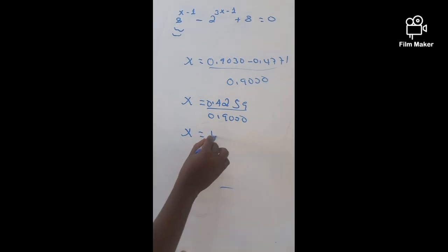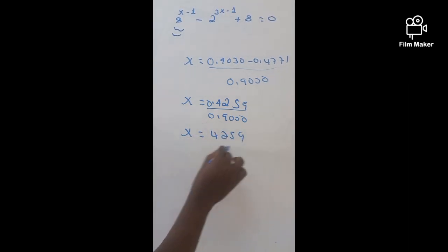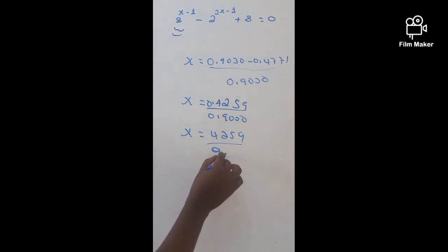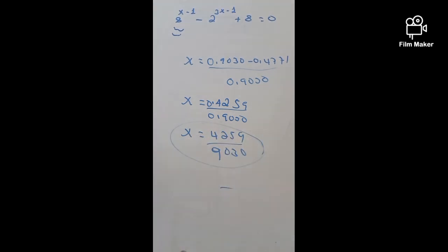So X is exactly 4259 over 9030. So this is the value for X. This is all about our today's lesson. If you are a new member of the channel, please subscribe.